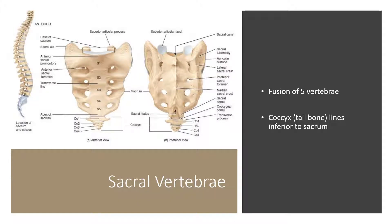The sacral vertebra is the most inferior vertebra. It's formed via a fusion of five vertebrae, and at the very tail end is the coccyx, or tailbone, which lies inferior to your sacrum.